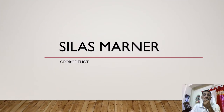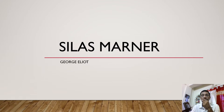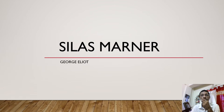Dear students, today's topic, as I have already mentioned, is Silas Marner by George Eliot — one of the very famous novels written by her. This is a sort of Victorian novel written with modern traits and characteristics, but it can never be called a modern novel. It is completely a Victorian novel. So let's go to the next slide.